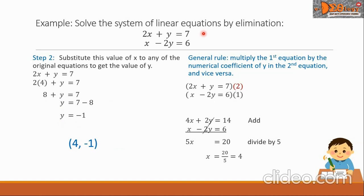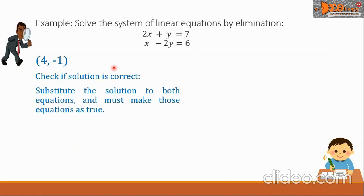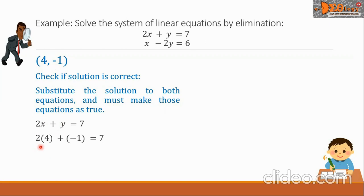Now let us check if this answer is correct by substituting the solution into both equations. Taking the first equation, 2x plus y equals 7: substituting x equals 4 and y equals negative 1, we get 2 times 4 plus negative 1, which must equal 7. That gives 8 plus negative 1 equals 7, which is 7 equals 7. So (4, negative 1) makes the first equation true.